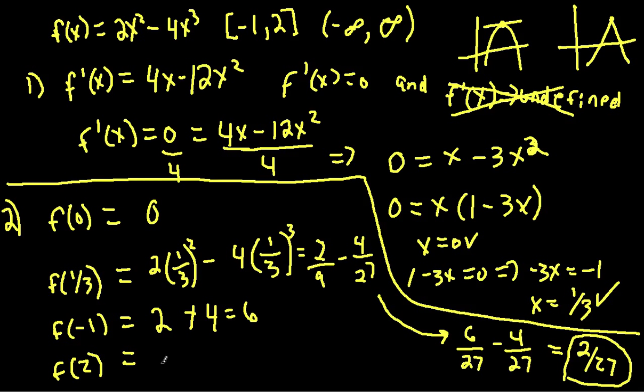And evaluating this at 2, 2 squared is 4, and 2 times 2 squared is 8 minus 2 cubed is 8, times this negative 4 is 32. And we're left with negative 24.